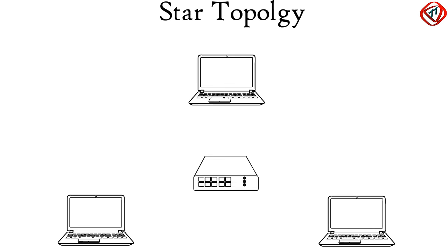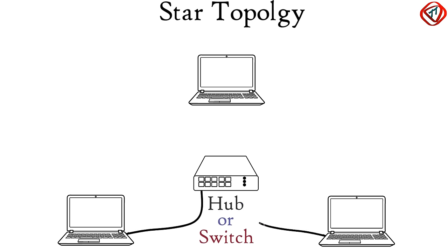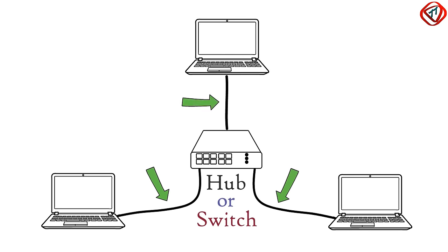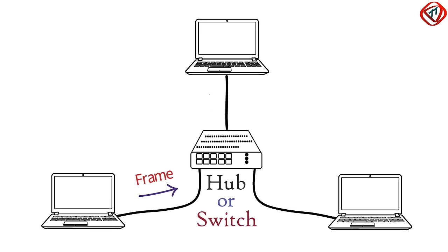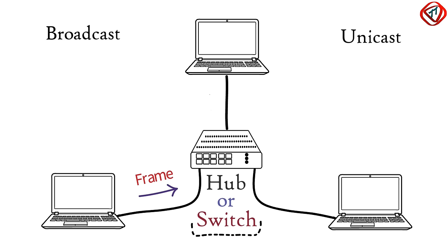Next is star topology. In star topology, computers connect to a central device — a switch or a hub — with point-to-point communication links. Point-to-point connection means there is a dedicated link or cable between two devices; other devices cannot use it. If one computer wants to send a data frame to another, it is first routed to the central device, which then either broadcasts or unicasts the received frame toward the destination computer. Broadcast means transmission to all connected devices, while unicast means transmission to the target device only.